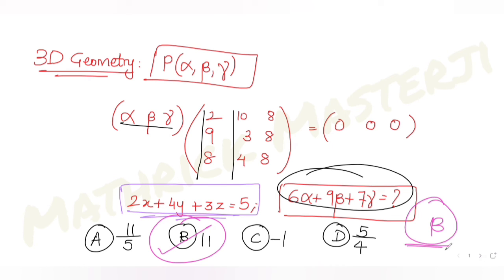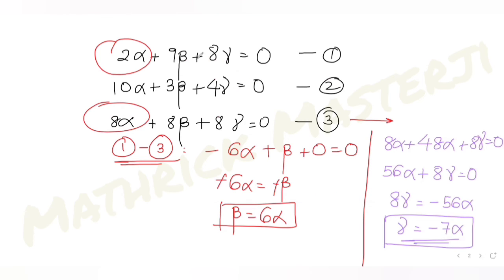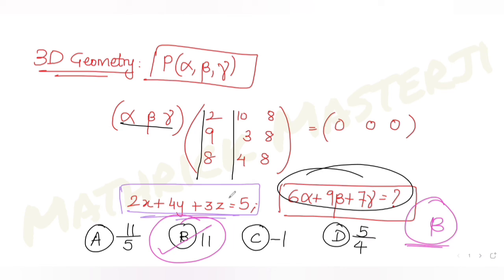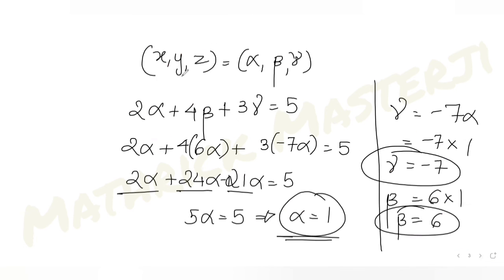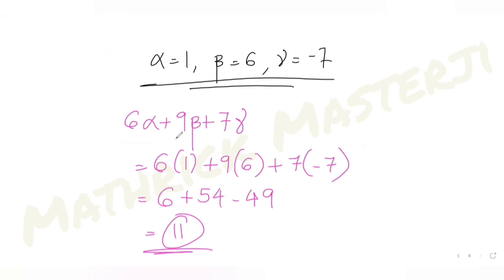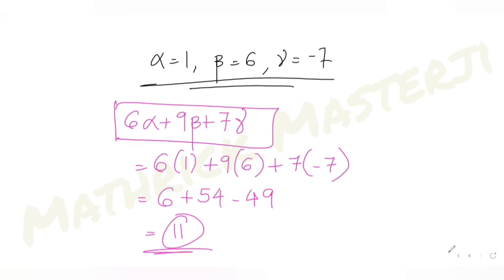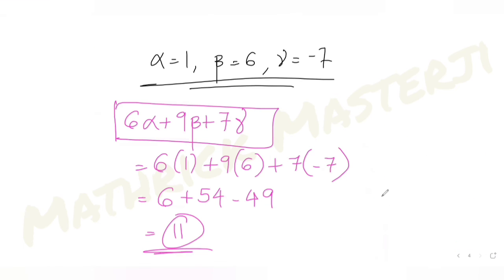I hope you've understood how to solve this type of question. Once I had the two matrices, I multiplied them to get three equations, solved those to get β and γ in terms of α, then used the plane condition to find α = 1, and from that got all three values. Substituting into the expression gave 11, which is option B.